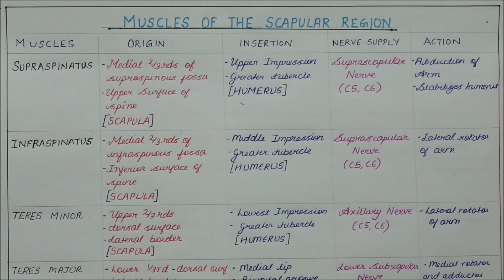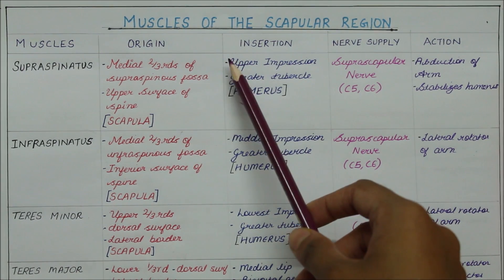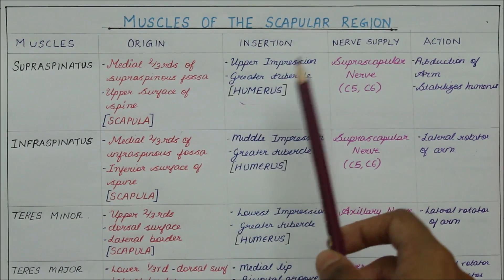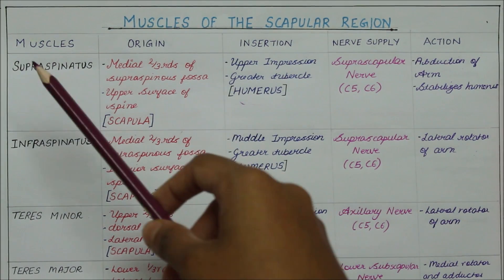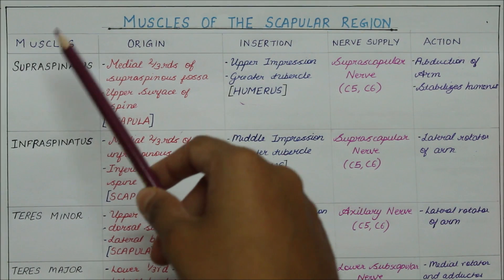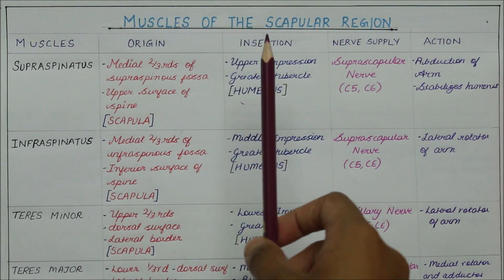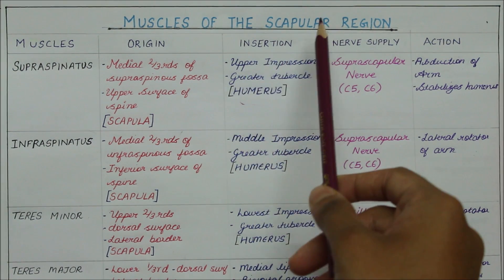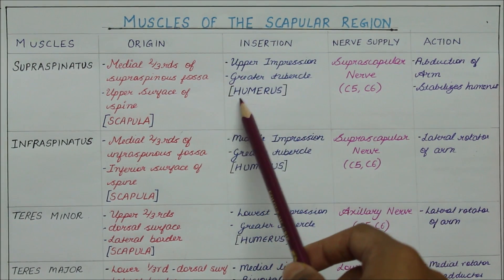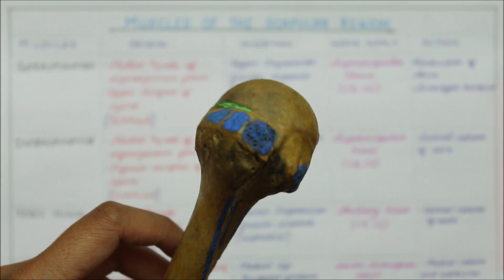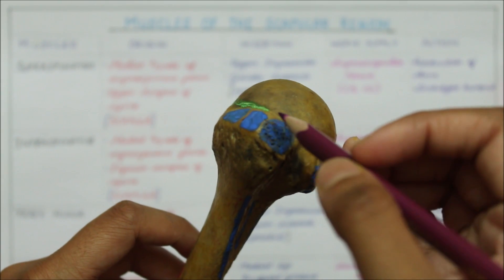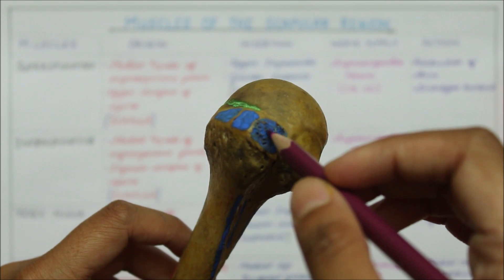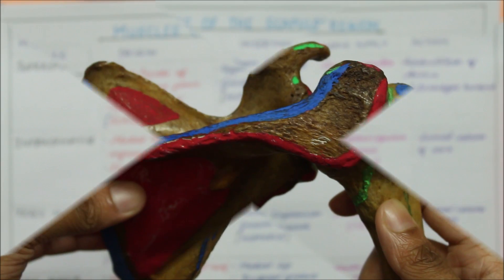Now let's look at the insertion of the supraspinatus. It inserts into the upper impression of the greater tubercle of the humerus. To remember this, as 'supra' relates to a higher level, we can remember that it is inserted into the upper impression, which is at a higher level of the greater tubercle of the humerus. This is the greater tubercle of the humerus and this is its upper impression where the supraspinatus is inserted.